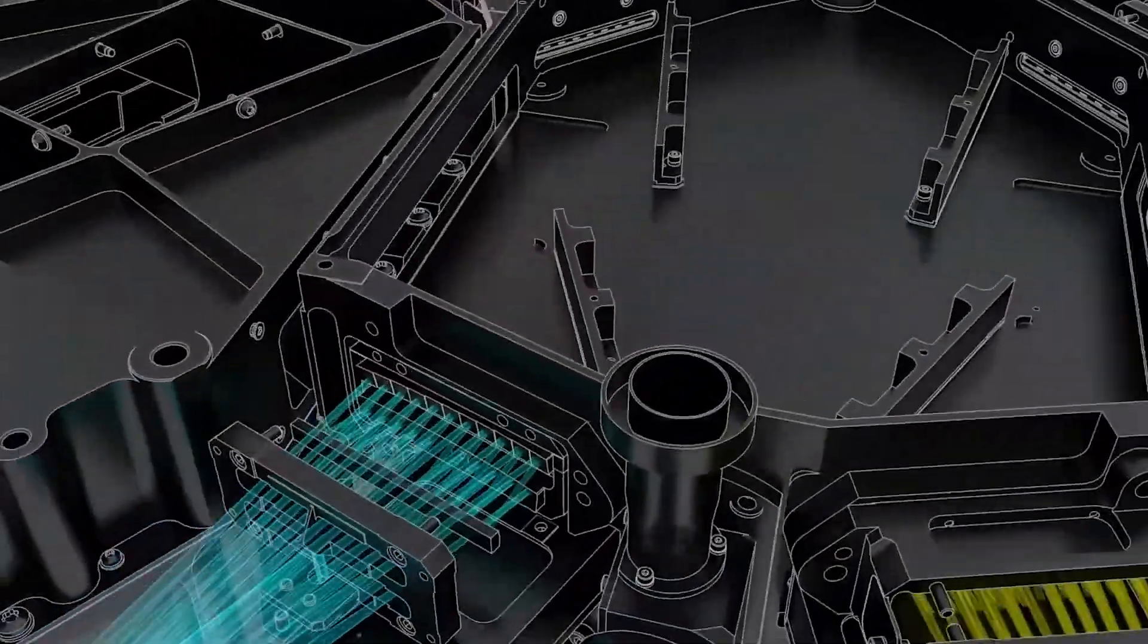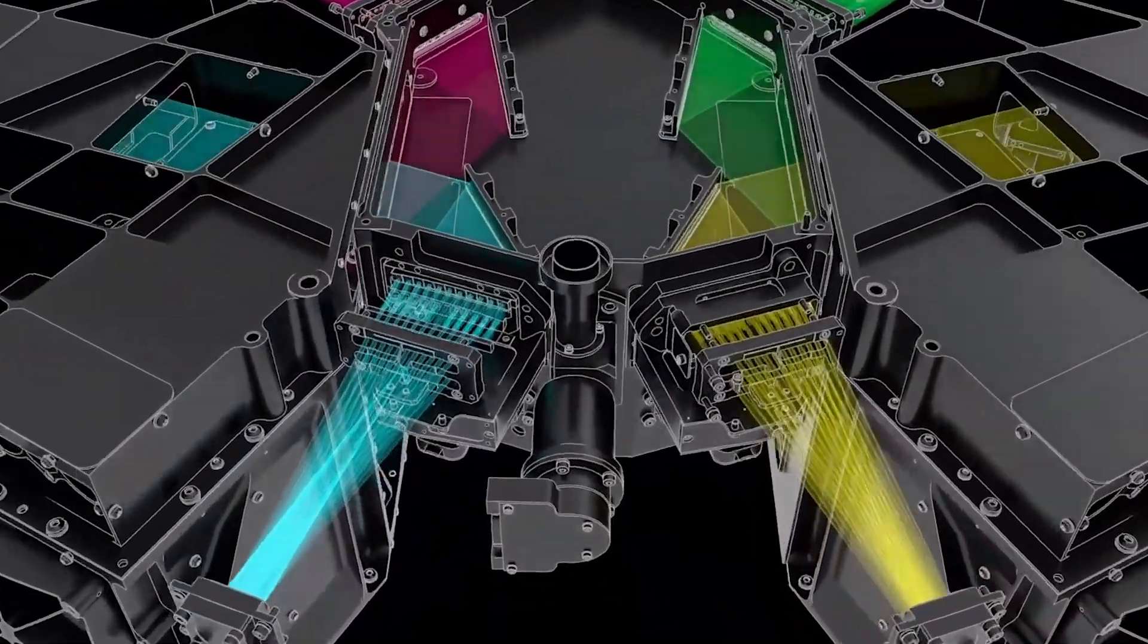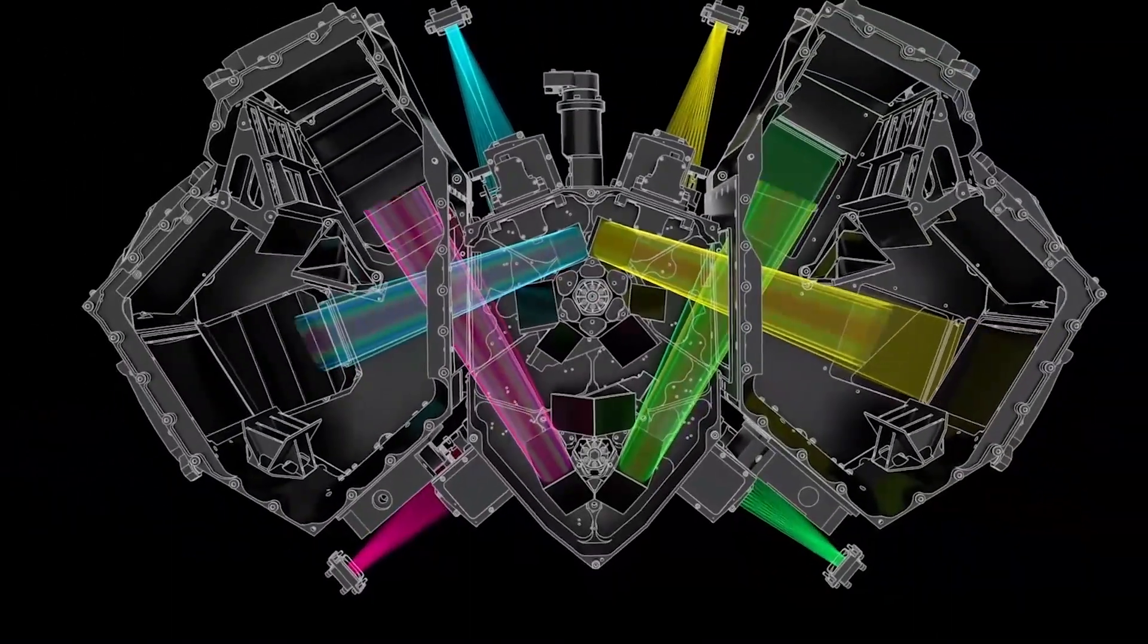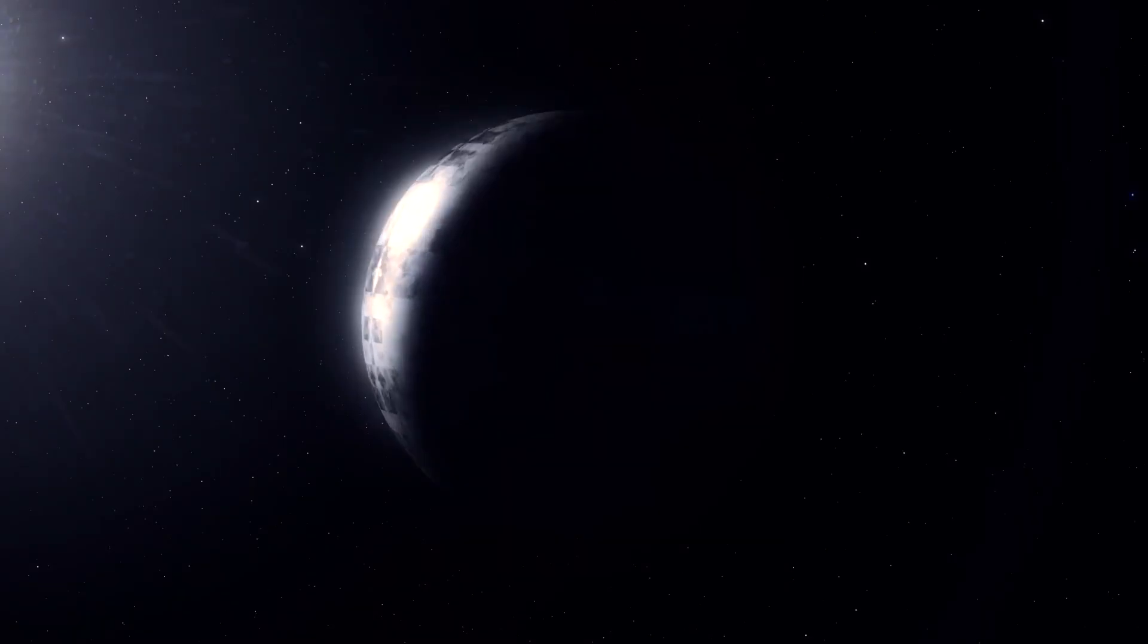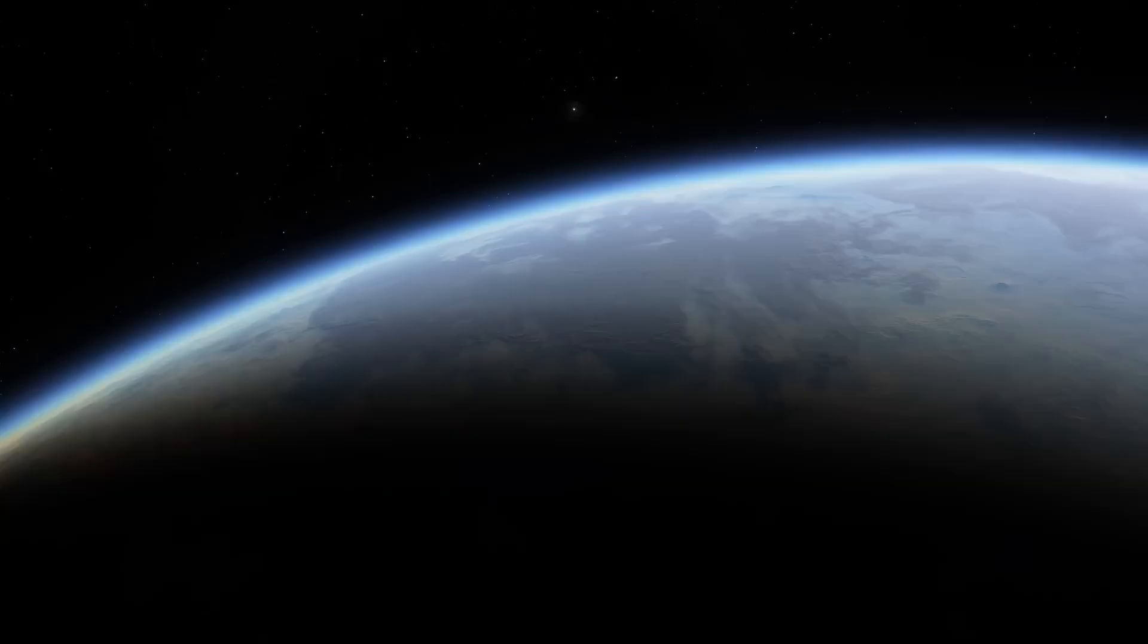Proxima b exhibits an interesting relationship between its stellar features and its surface interactions, with its daytime side adorned with solar panels that harness the energy of its host star, while its nightside experiences cold temperatures.